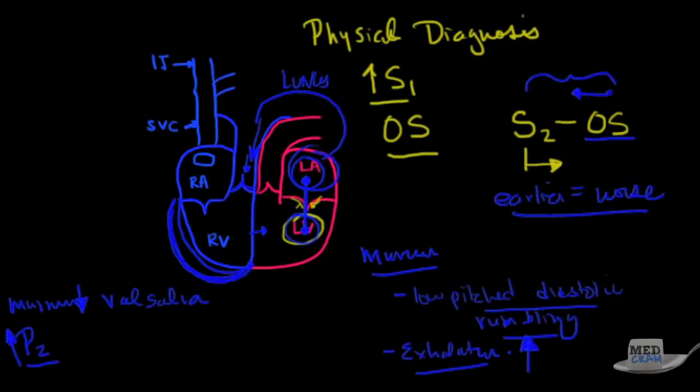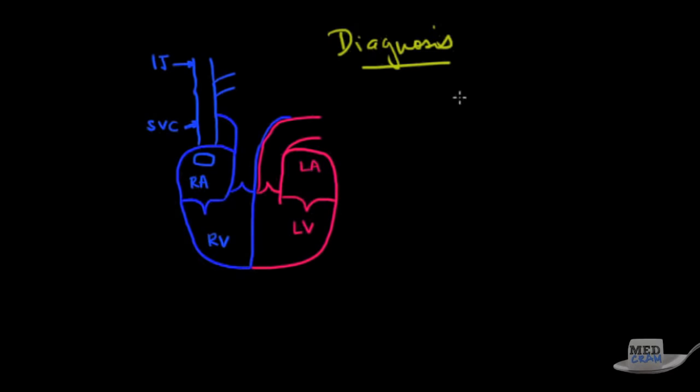So I think the keys here are that you're going to see an increased S1. You're going to hear an opening snap. The earlier the opening snap, the more severe the mitral stenosis. You're going to hear a low-pitch rumbling diastolic murmur. And you may hear a P2 due to pulmonary hypertension and increased right ventricular lift from right ventricular hypertrophy.